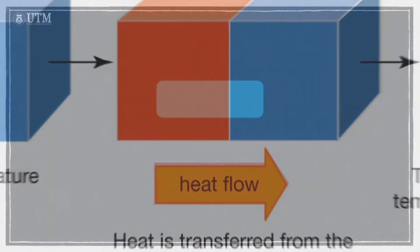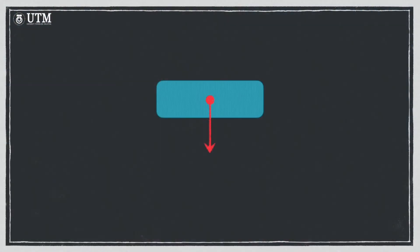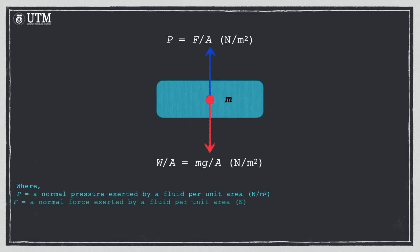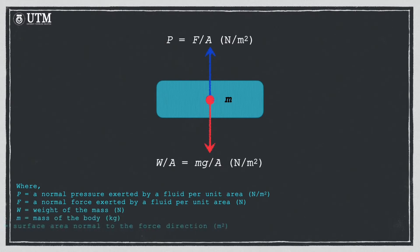Mechanical equilibrium is related to pressure. A system is in mechanical equilibrium if there is no change in pressure at any point in the system with time. However, the pressure may vary within the system with elevation as a result of gravitational effects, and there is no imbalance of forces.